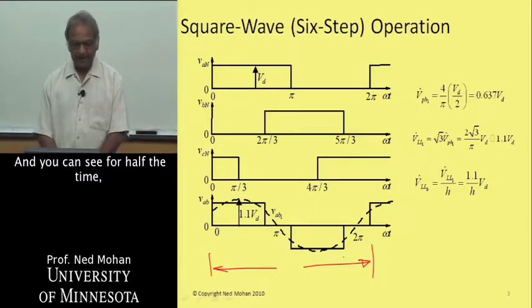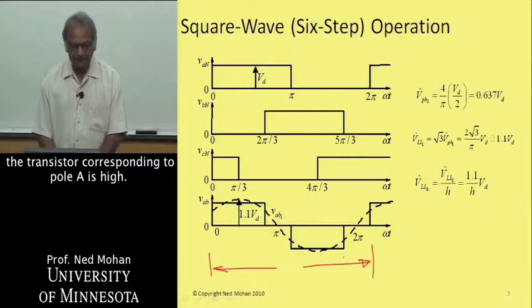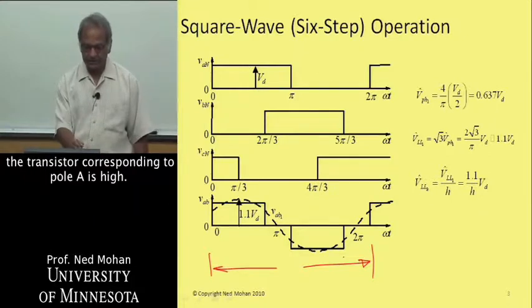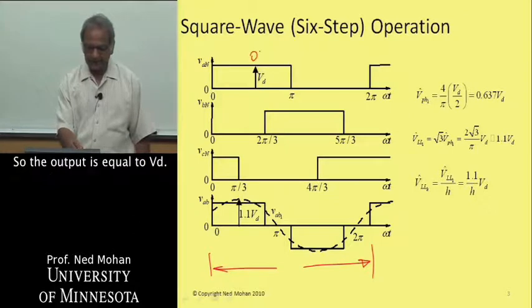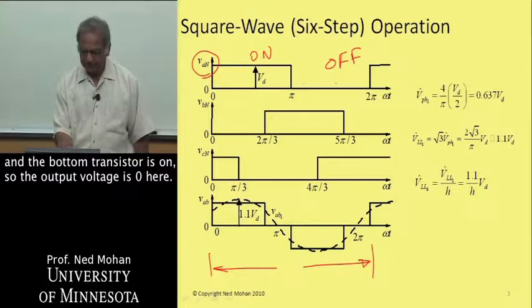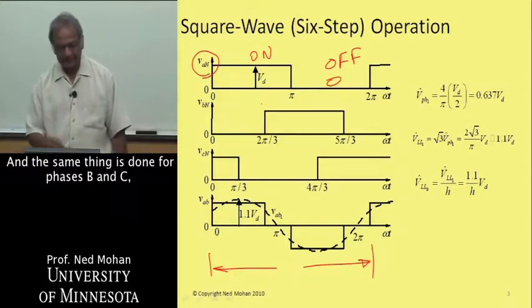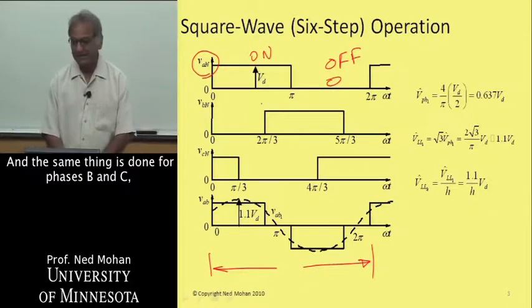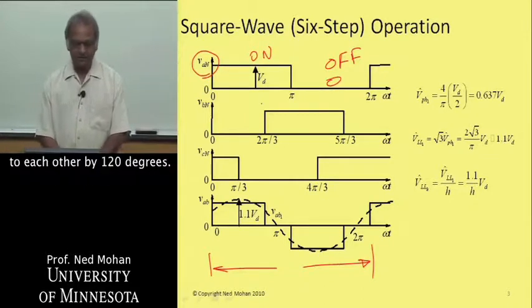It's 2 pi here. You can see for half the time, the transistor corresponding to pole A is high, so the output is equal to Vd. And here the top transistor is off and the bottom transistor is on, so the output voltage is zero here. The same thing is done for phases B and C, where they are displaced with respect to each other by 120 degrees.